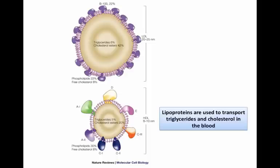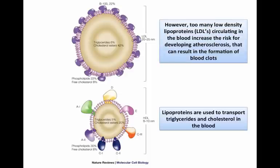We need some fat stores in our body, so fats are important. But if we have too much of a good thing, that's where we can run into trouble. In particular, the low-density lipoproteins shown at the top here are the ones that seem to be the culprit. And if there are too many of these low-density lipoproteins circulating, then a person is at greater risk for developing atherosclerosis.